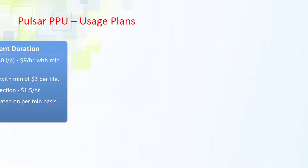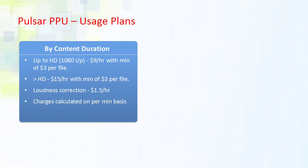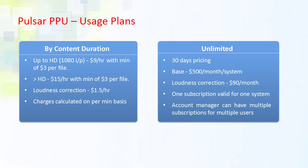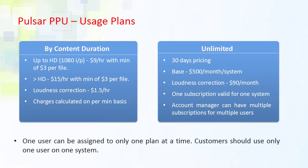There are two usage plans for Pulsar PPU. You can either sign up and use it by content duration, or you can sign up for the unlimited package which allows you to QC all the content you want for a set price of $500 per month per system. A user can be assigned to only one plan at a time, and we recommend that you only use one user on one system.